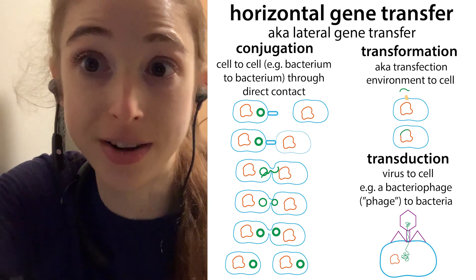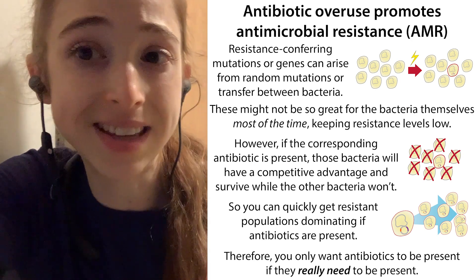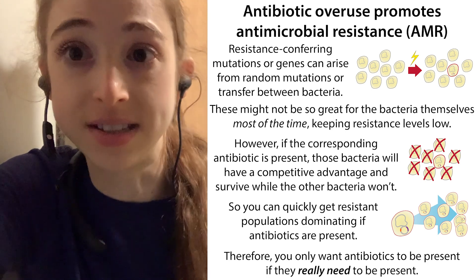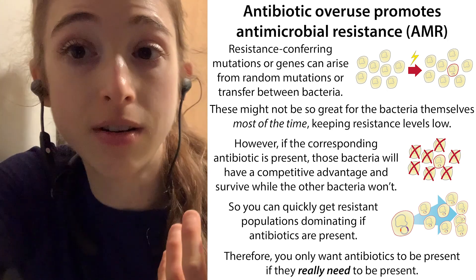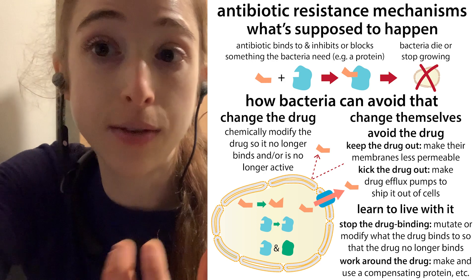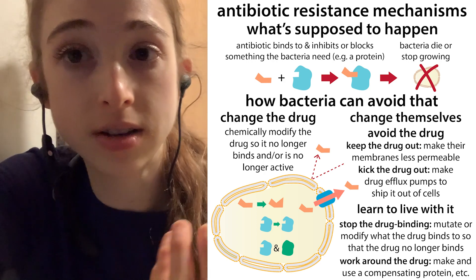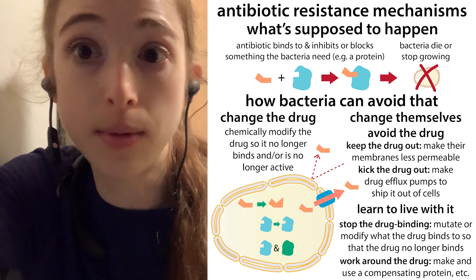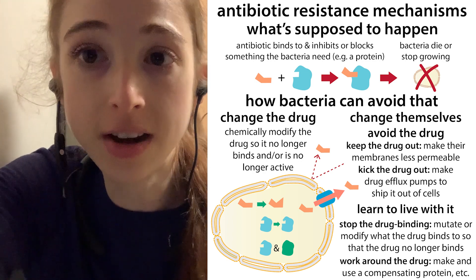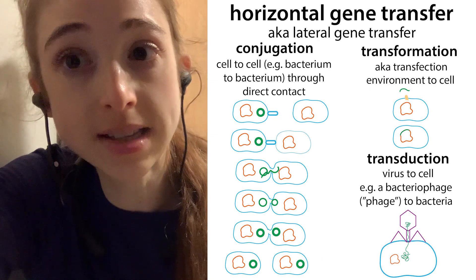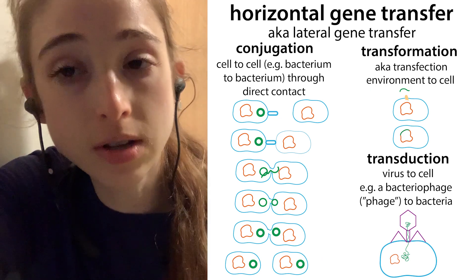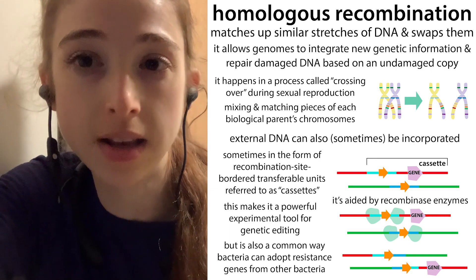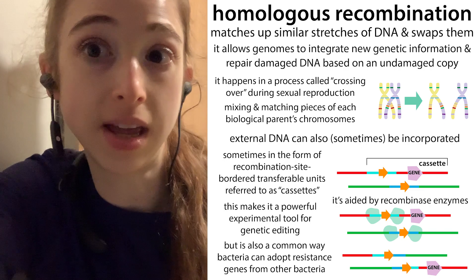This is also just like the transformation we do in the lab to get plasmids into cells — some cells can actually naturally do transformation and take in genetic information such as from dead bacteria around them. Horizontal gene transfer is a key mechanism not only for generating genetic diversity, but also for how bacteria quickly acquire antibiotic resistance. If one bacterium has a resistance gene, through horizontal gene transfer that gene can be transferred to a bacterium that didn't have it, making it resistant in one fell swoop.